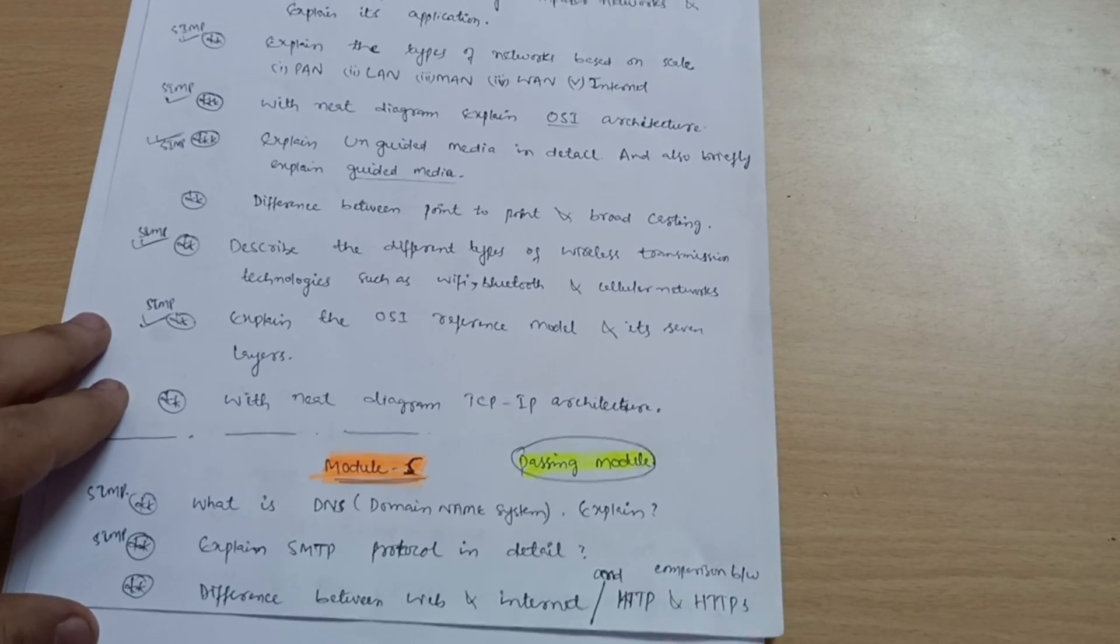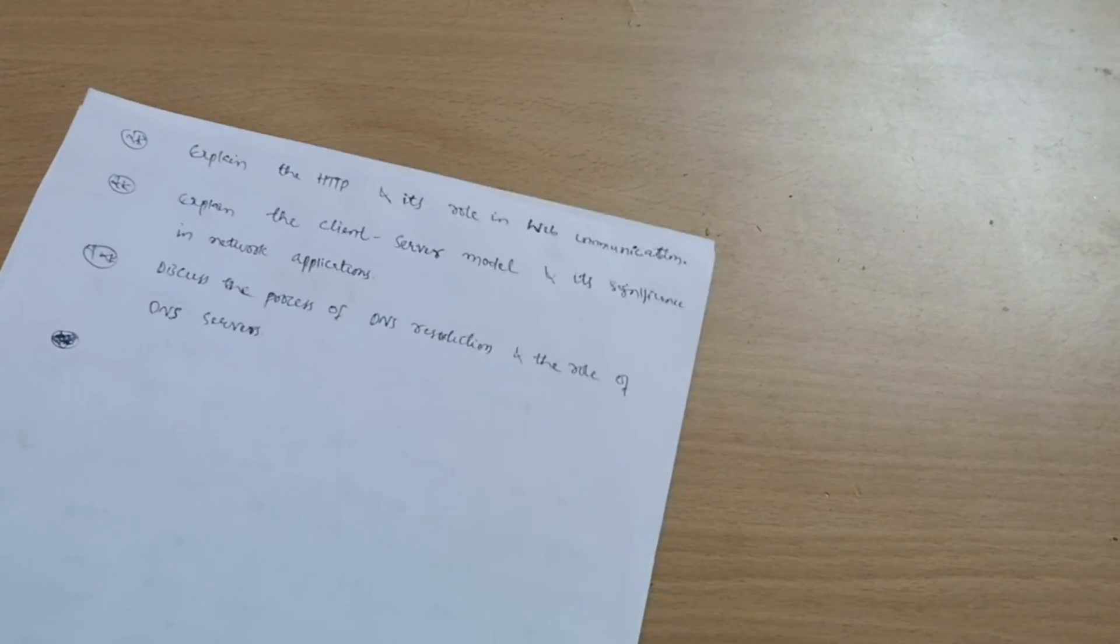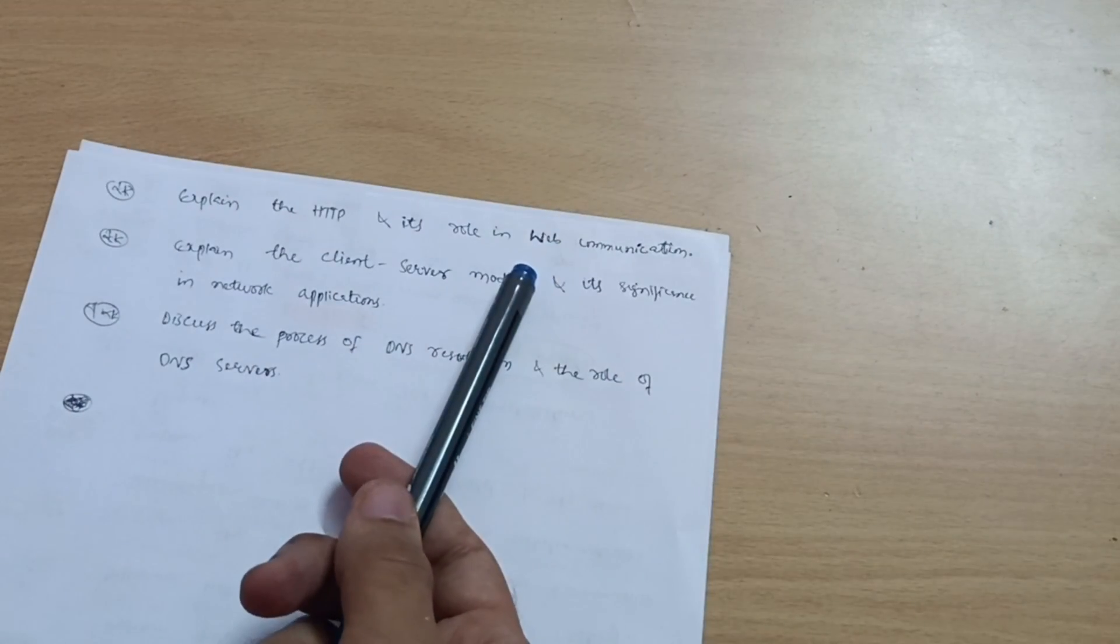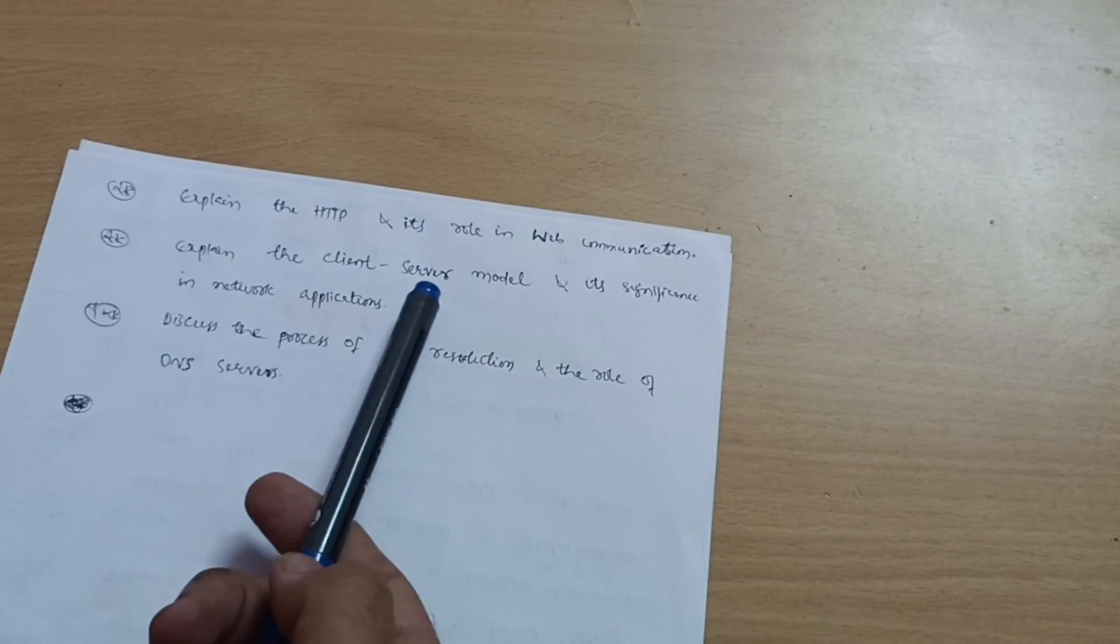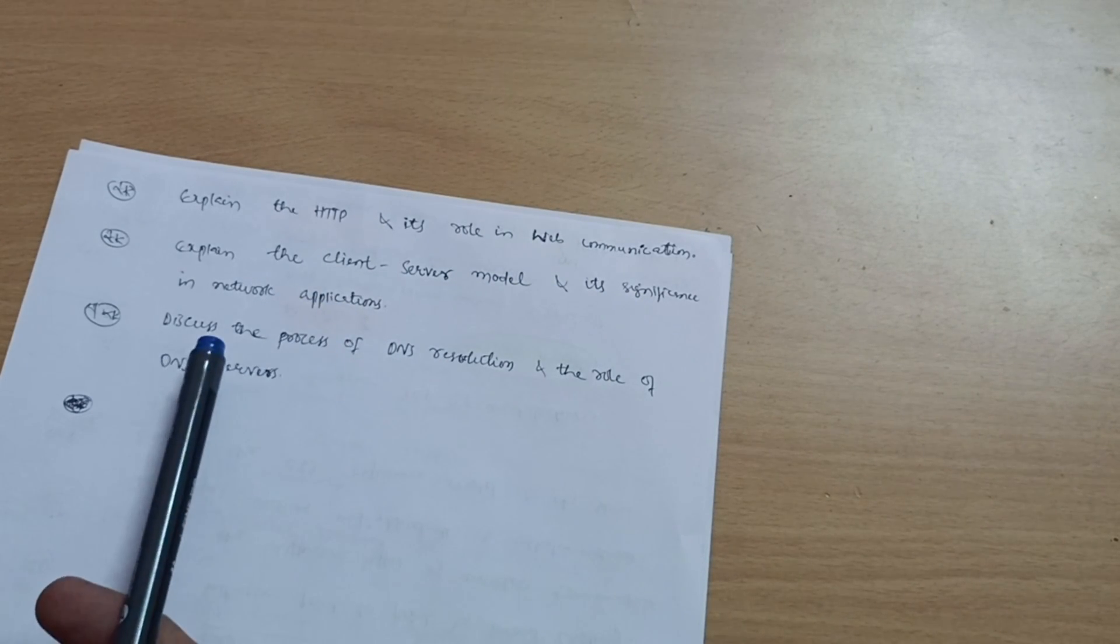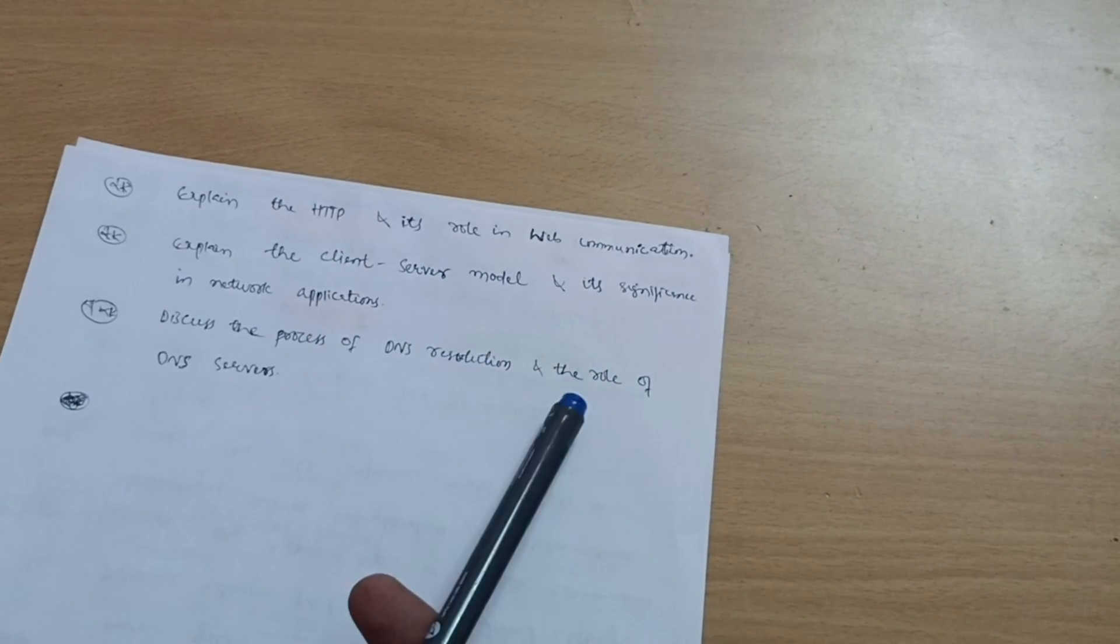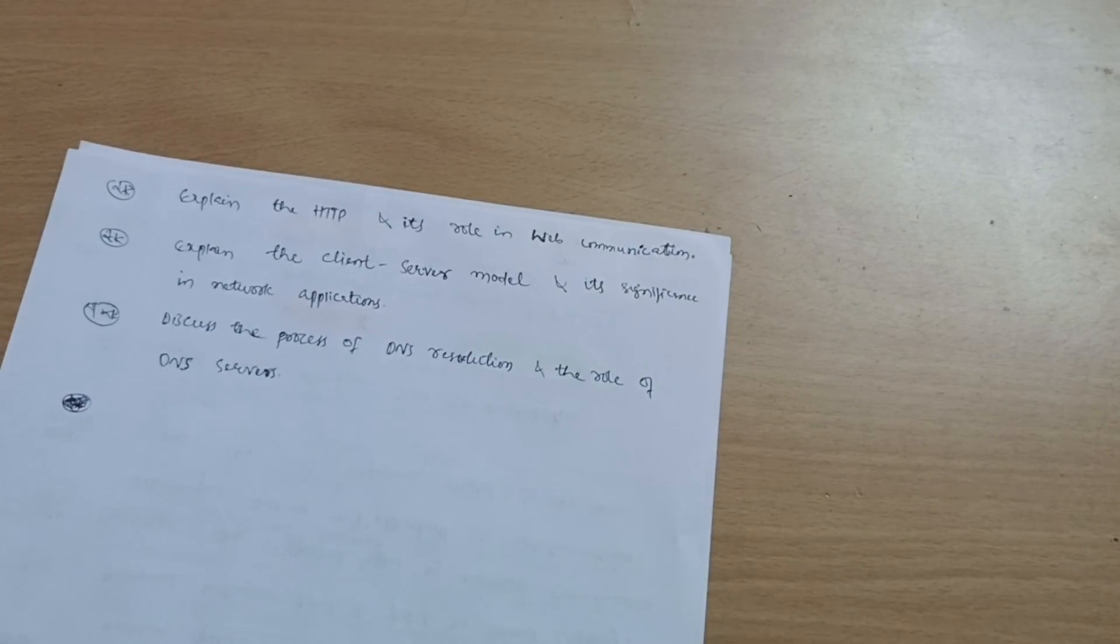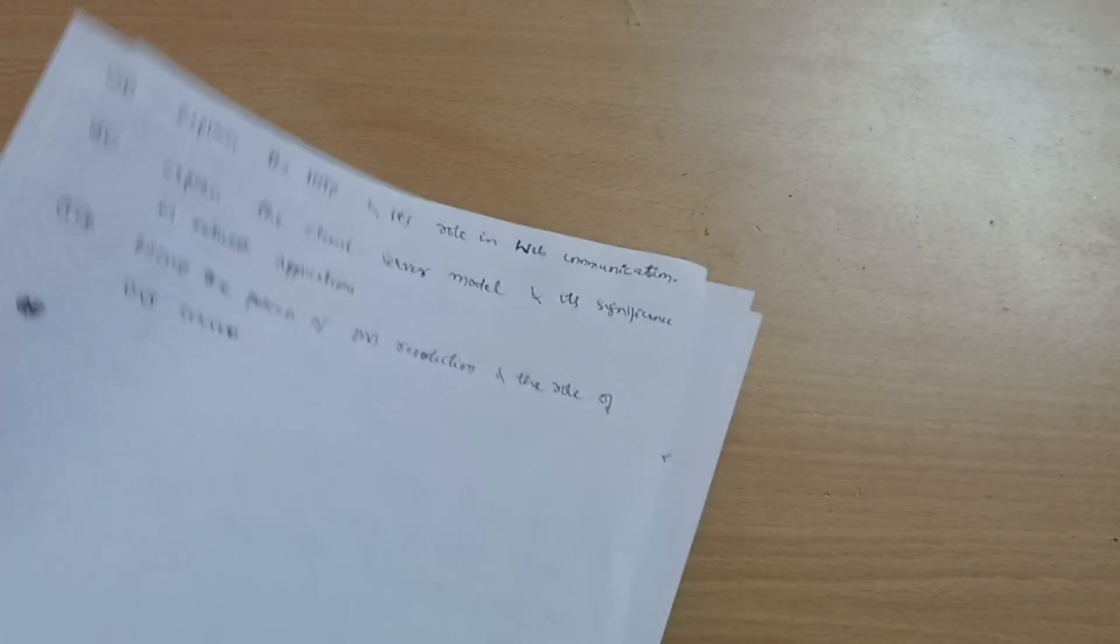and HTTPS. These are the questions from Module 5. Next is explain HTTP and its role in web communication. Explain the client-server model and its significance in network applications. Discuss the process of DNS resolution and the role of DNS servers. This is all about Module 5.